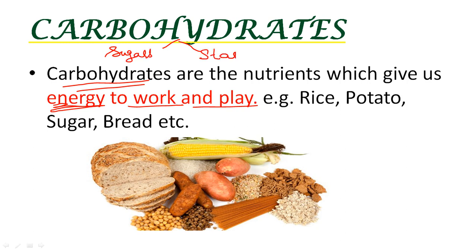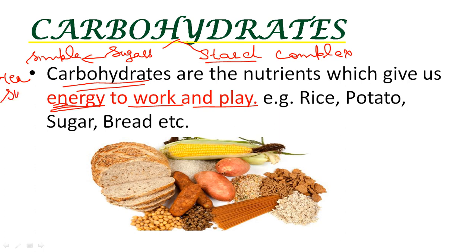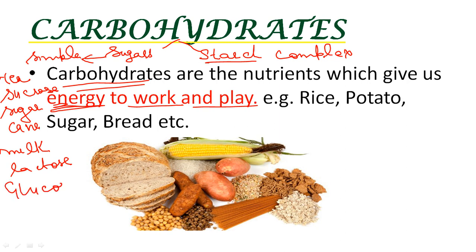The two types of carbohydrates are sugars and starch. Sugar is a simple carbohydrate and starch is a complex carbohydrate. The sugar we add in our tea, coffee, and cake is sucrose, which we get from sugar cane. The sugar present in milk is known as lactose. Another sugar, glucose, is the simplest of all sugars and is immediately absorbed into the blood from the food pipe. That's why in emergency situations doctors give glucose to patients — it gives instant energy to the body.